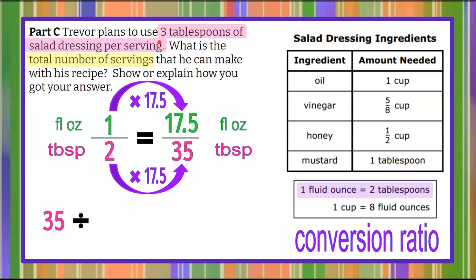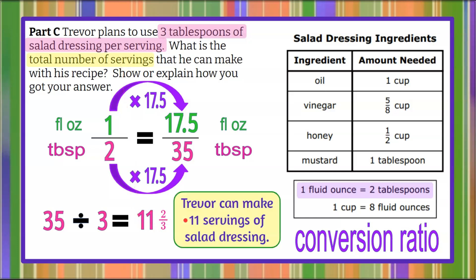We want to divide 35 by 3, which will tell us how many servings we can get. Three goes into 35 eleven times evenly — 11 times 3 is 33 — with 2 thirds remaining. So 35 divided by 3 is 11 and 2 thirds. Since we're asked how many complete servings he can make, we disregard the 2 thirds remainder. Trevor can make 11 servings of salad dressing — he'll have a little left over, but it won't be a complete serving.